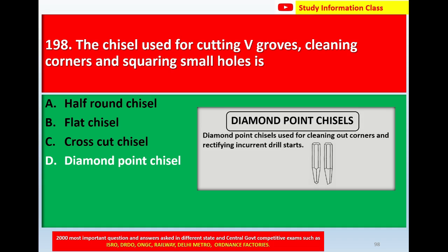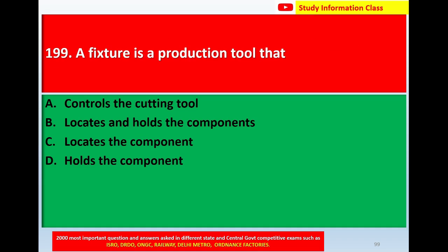For question number 198, the chisel used for cutting V grooves, cleaning corners, and squaring small holes — the correct answer is option D, diamond point chisel. Next, question number 199: a fixture is a production tool that.